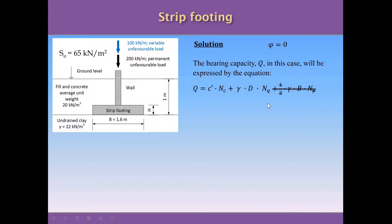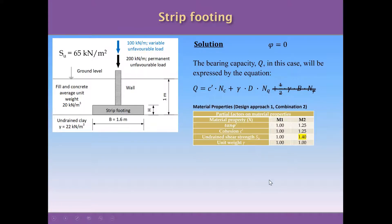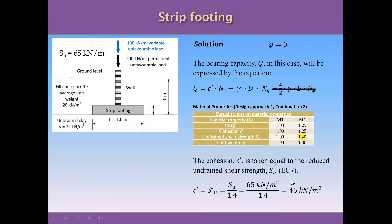The next step is to identify the coefficient of reduction of the shear strength Su, which is equal to 1.40. This is necessary because we are going to determine the cohesion using the undrained shear strength. The undrained shear strength is divided by 1.4 from the Eurocode table for Design Approach 1, Combination 2. The result is that the cohesion is equal to 46 kN per square meter.